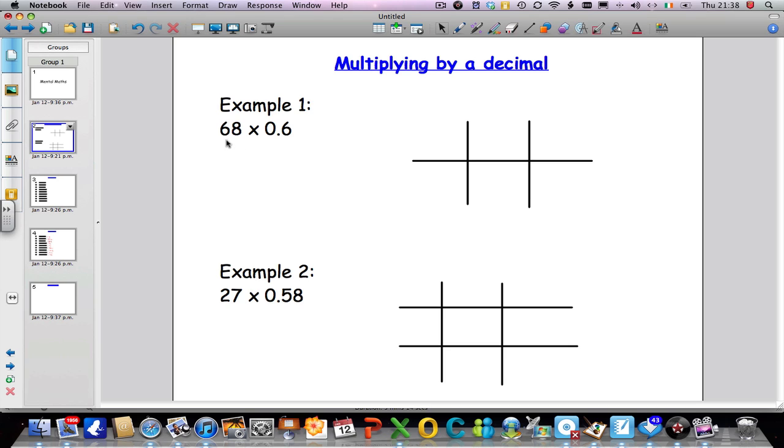So we're going to take whole numbers and then multiply them by decimal numbers. Hopefully you've looked at my video on the grid method of long multiplication because this method is very, very similar.